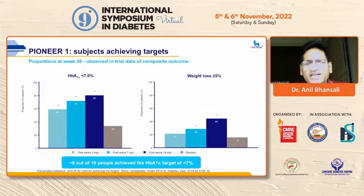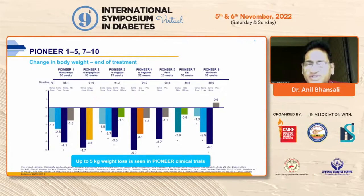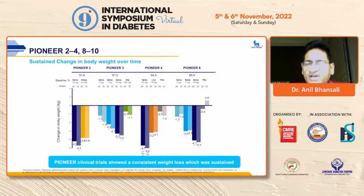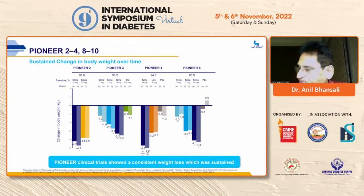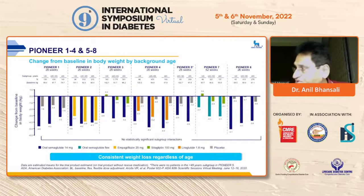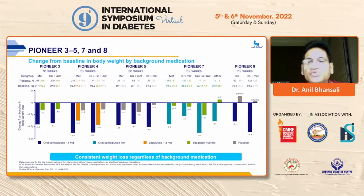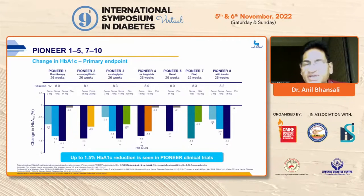Data from the PIONEER trials show that 8 out of 10 patients could achieve HbA1c below 7%. More than 50% of people could achieve weight loss of more than 5%. Up to 5 kg weight loss was seen across all PIONEER trials with consistent, sustained results. If you continue therapy, weight loss is maintained. If discontinued, there is around 2–3 kg weight regain, though you may still remain 3 kg below baseline. The HbA1c reduction was 1.5% in clinical trials, at a baseline HbA1c of around 9%.